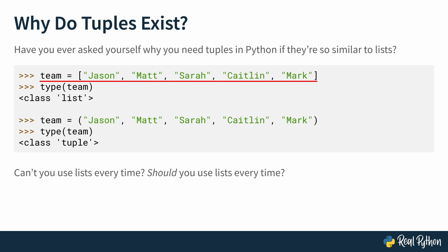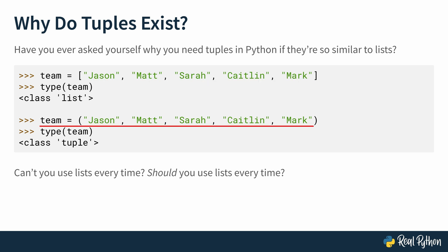Here you can see a list called team with a number of names, and then a tuple called team. You can treat lists and tuples in similar ways — not identical, but similar ways. So can't you use lists every time? Should you use lists every time? The answer is no. In this course, we'll see why sometimes you need to use tuples, and your program requires you to use tuples.